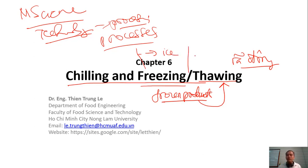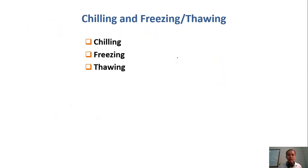In thawing, you convert ice back to liquid water. These are two different processes. So in this chapter, we have three parts: chilling, freezing, and thawing.